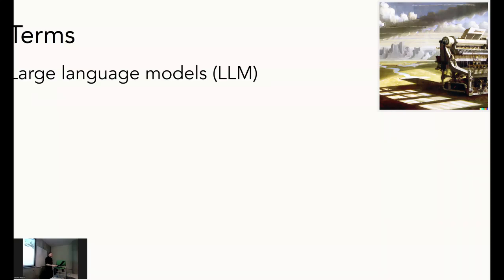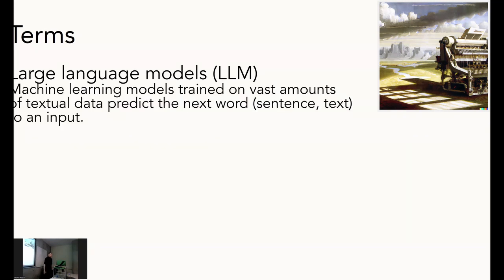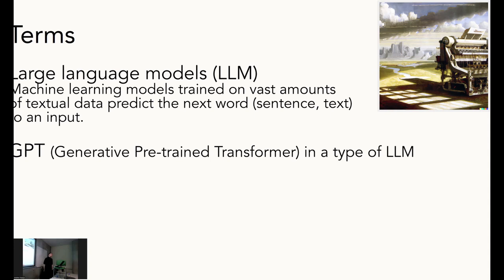Basic terms: what we're talking about in terms of text are large language models — that is actually a term now. They're machine learning models trained on vast amounts of text and data to predict the next word, and given that they're now more powerful, also the next sentence, the next text, and so on. If that sounds like autocomplete, that is exactly what it is. GPT — generative pre-trained transformer — is a type of large language model.